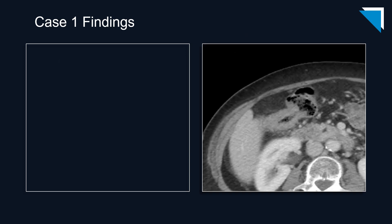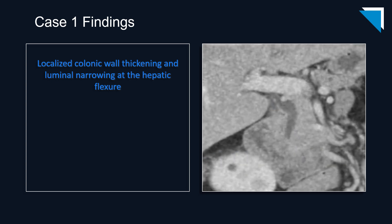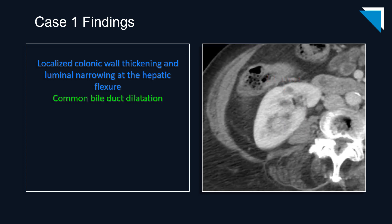There are several findings to discuss in this case. The first is in the right upper quadrant in the proximal transverse colon near the hepatic flexure — there is a localized area of irregular colonic wall thickening and luminal narrowing. The second finding is also in the right upper quadrant: the common bile duct is dilated up to 11 millimeters with abrupt cutoff distally. But there is a third, no less important finding — albeit subtle — in the right kidney. You can see how subtle and easy to miss this finding would be even without the satisfaction of search pitfall we face having already made two important findings.